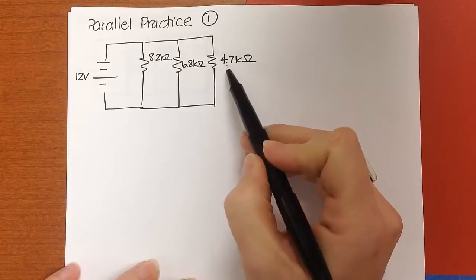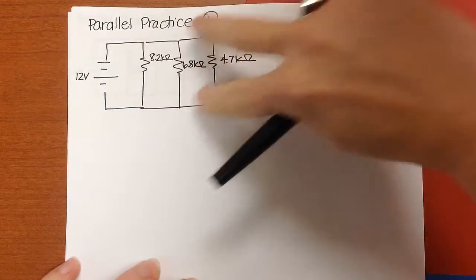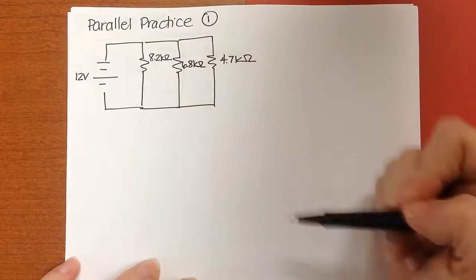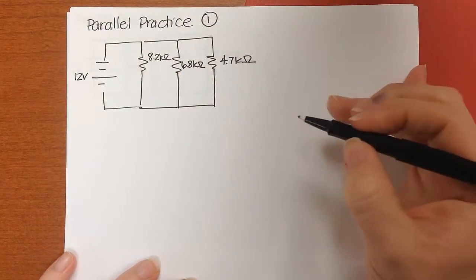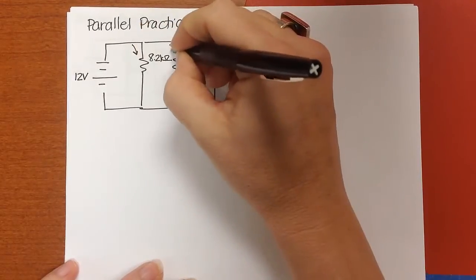So we have three resistors, they are in parallel, so we know the voltage across each branch is going to be 12 volts. And I would like to find the current in each branch and the total current.